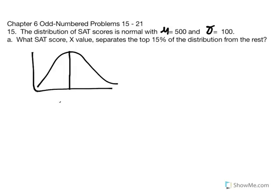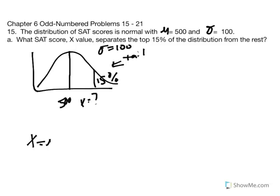We know that the mean is equal to 500 and the standard deviation is equal to 100. We want to find out what X value separates the top 15%, which we understand as the tail of the distribution. We're solving for X, so X is equal to mu plus our standard deviation multiplied by our Z score.